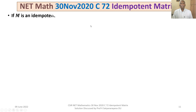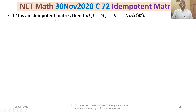To prove Option 4, we first establish a required result: if M is an idempotent matrix, then the column space of (I − M) equals the null space of M, which equals E₀. This is straightforward to prove.